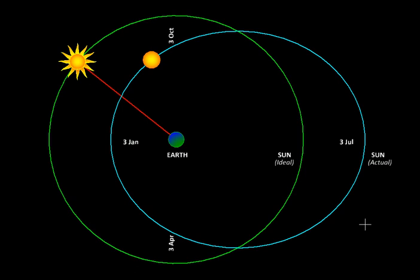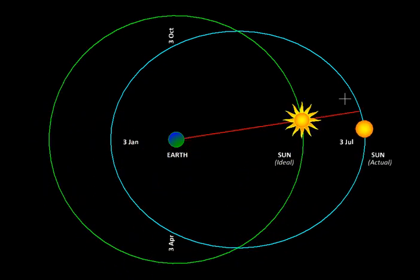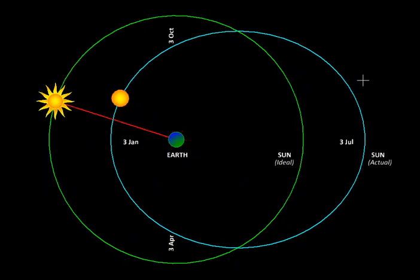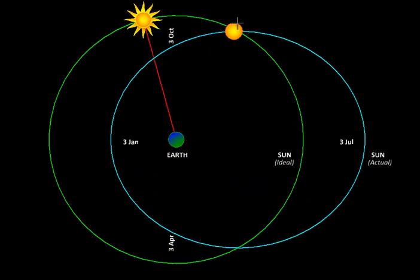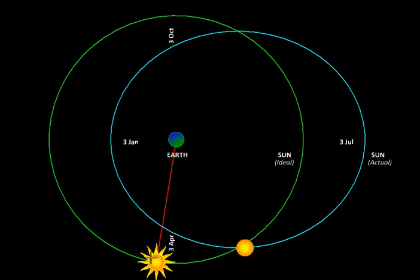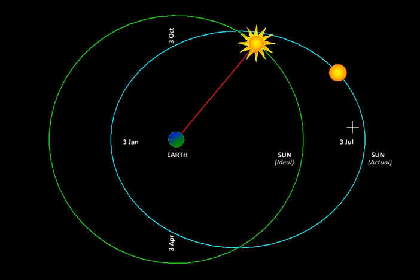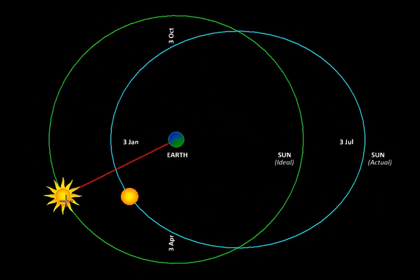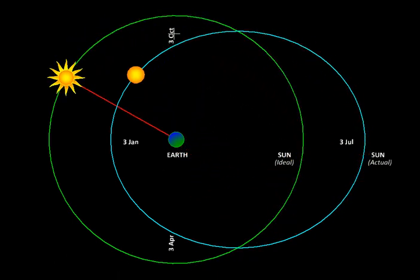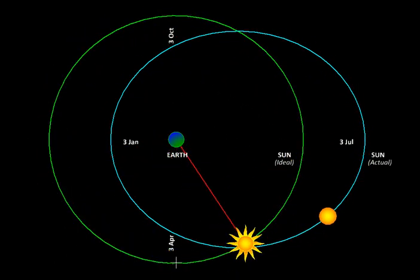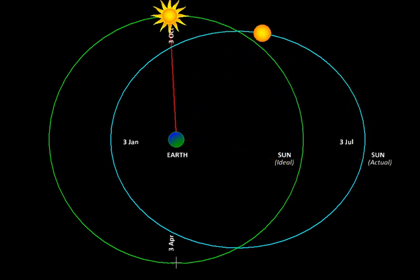Now does this remind you of something? Here we are looking at a periodic phenomenon which repeats itself every year. Number two, for half the cycle, it is having a positive correction. For half the cycle, it is having negative correction. And then again, the maximum values of this correction, the amplitude, is equal on both sides. 7.5 minutes on one side, 7.5 minutes on the other. It reminds us of a sinusoidal function.